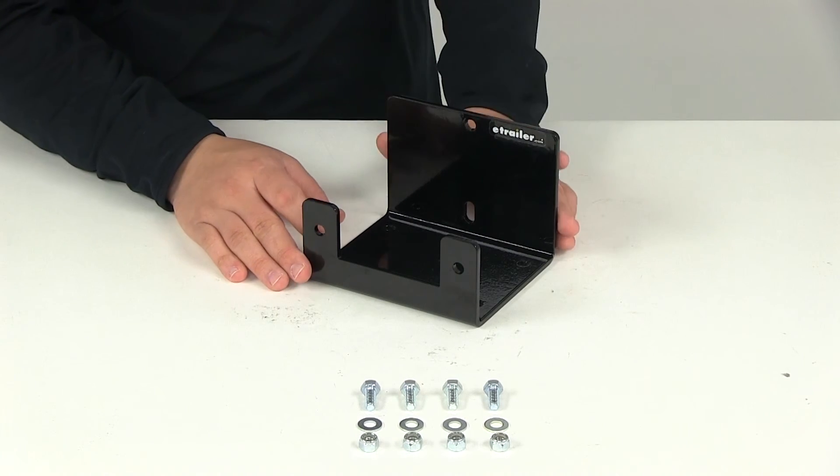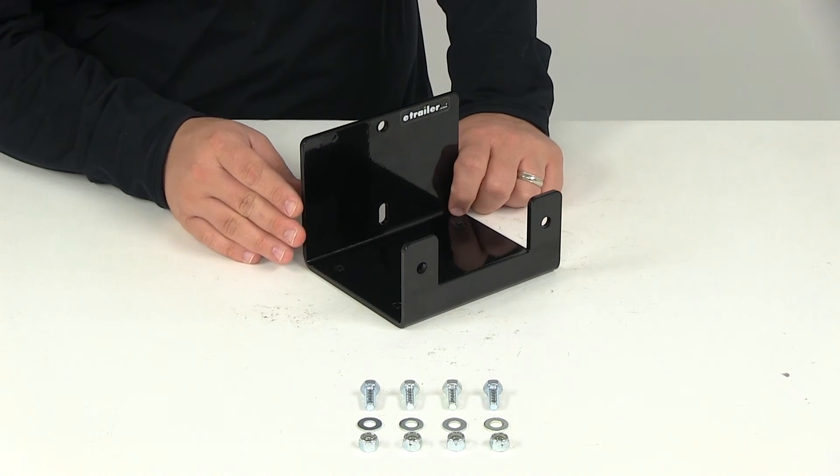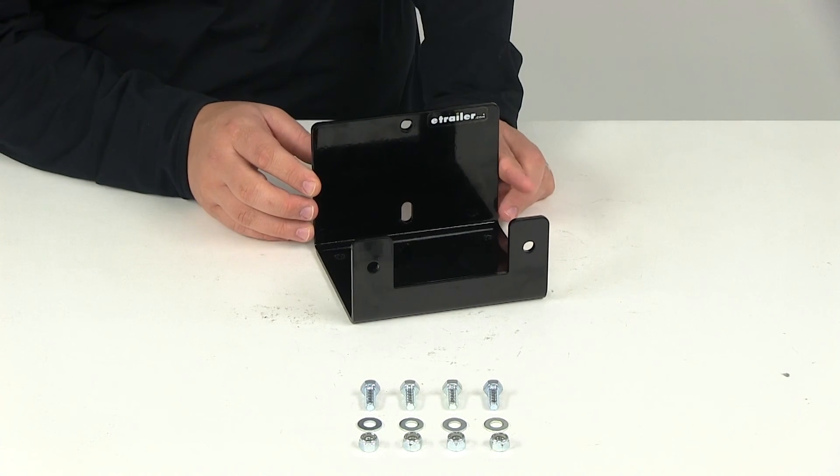That does it for our review of part number BDW15177. This is the Bulldog custom fit steel winch mount for the Kawasaki 300 Brute Force.